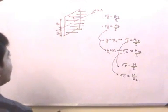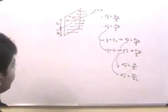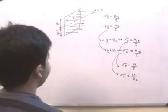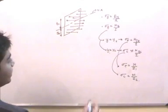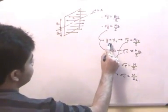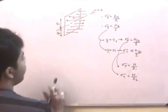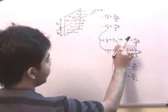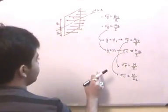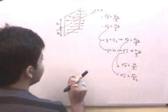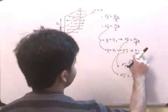When y equals yc or yt, we get the maximum and minimum values of normal stress. The minimum normal stress is the maximum compressive stress. At the bottom fiber where y equals yt, the maximum tensile stress is sigma_t = M·yt/I. At the top fiber where y equals yc, the maximum compressive stress is sigma_c = M·yc/I.